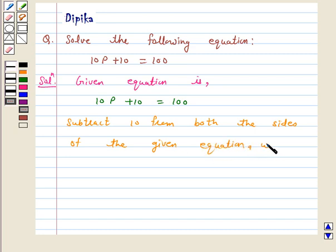Now we get 10p plus 10 minus 10 is equal to 100 minus 10, or 10p is equal to 90.